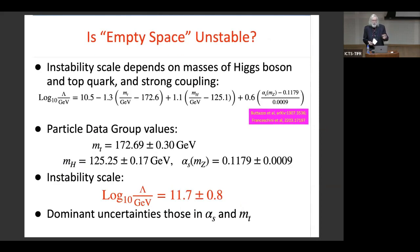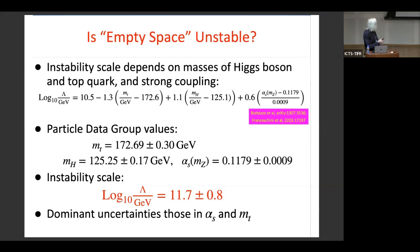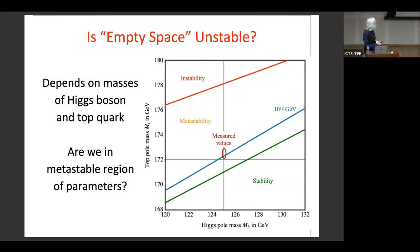Numerical calculations within the standard model show this stability issue is linked to the mass of the top quark, the mass of the Higgs boson, and the strong coupling constant. Putting in the current Particle Data Group best-fit values, there's an instability of the electroweak vacuum which sets in at a scale of about 10^11 to 10^12 GeV. If the Higgs mass had been larger or the top quark mass had been smaller, we'd be in a stable state, but instead the one-standard-deviation PDG values indicate we live in this unstable regime.